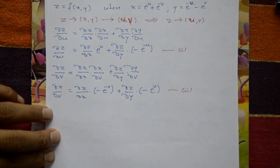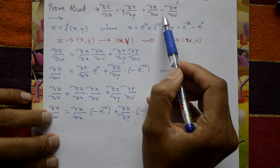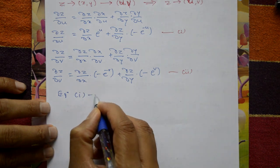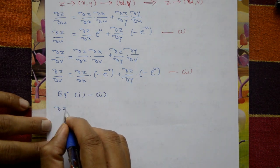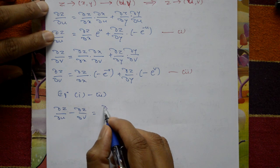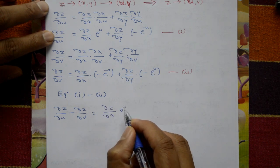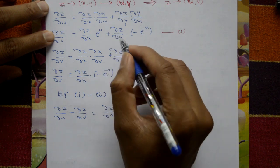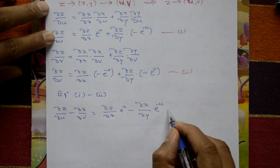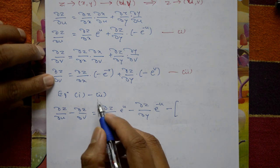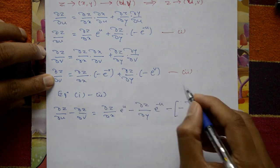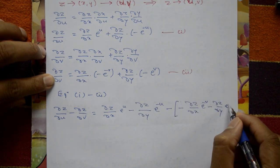The right hand side is dou z by dou u minus dou z by dou v, so we subtract equation 2 from equation 1.